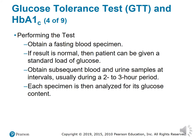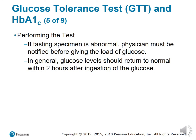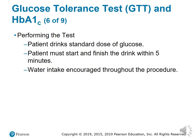Performing the GTT: obtain a fasting blood specimen. If the result is normal, the patient can be given a standard load of glucose. Obtain subsequent blood and urine samples at intervals, usually during a two- to three-hour period. Each specimen is then analyzed for glucose content. If the fasting specimen is abnormal, the physician must be notified before giving the glucose load. Glucose levels should return to normal within two hours after ingestion.